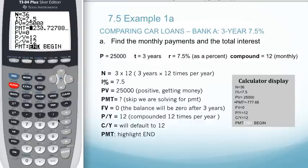Let's solve. Alpha, Enter. We get a payment of $777.66 after we round.